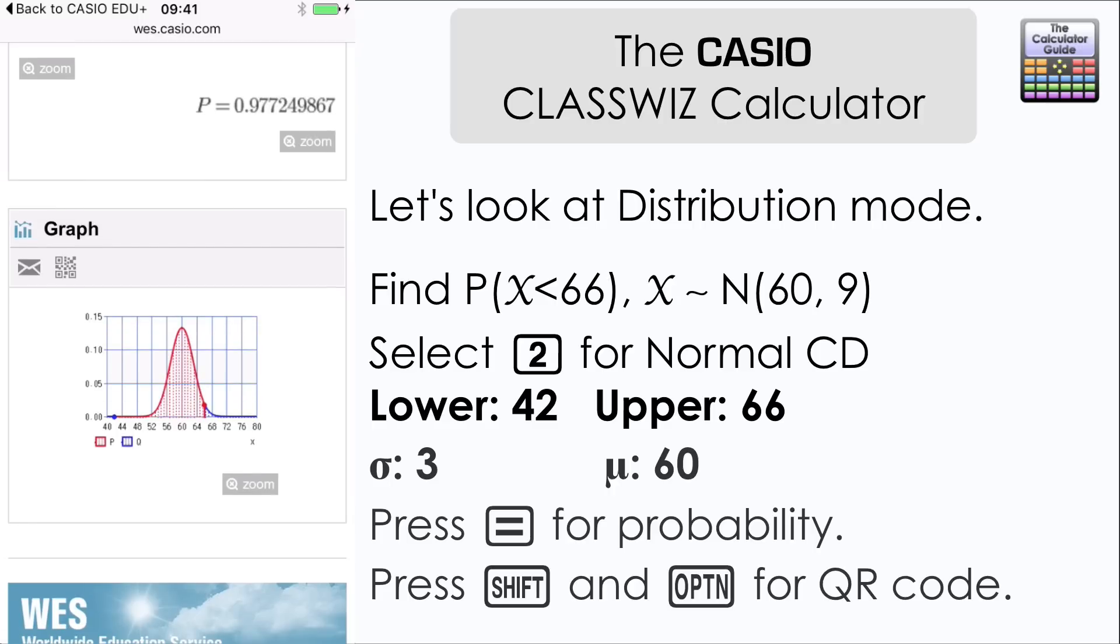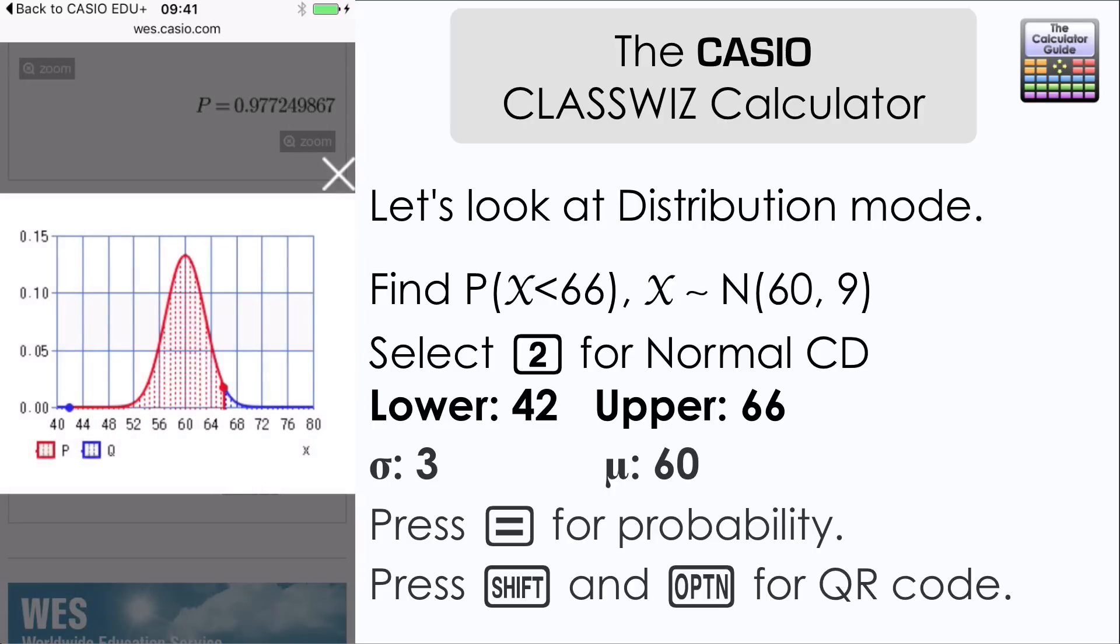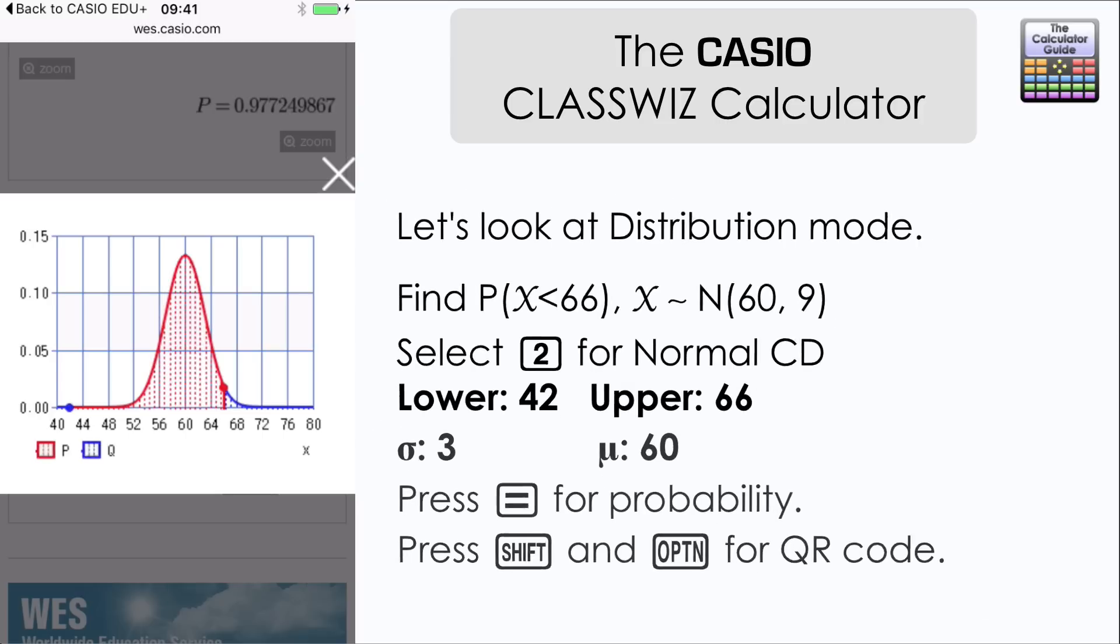And here we can see it displayed on the graph. The portion that's highlighted in red is the portion that was included as part of our probability. And then we have the other areas there labelled as blue. The Q areas. We do have a little bit on the left hand side there. But that is quite negligible as we made the lower portion quite low. Six standard deviations away from the mean.